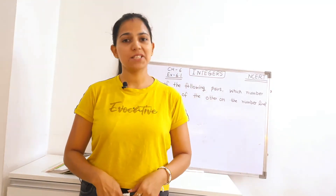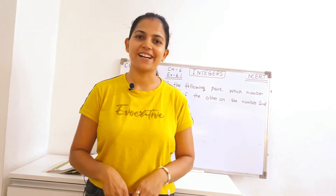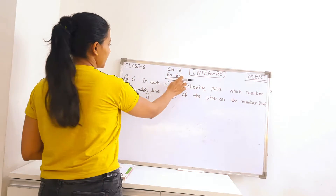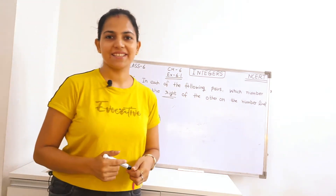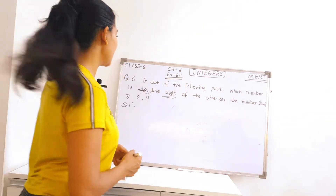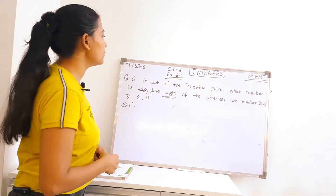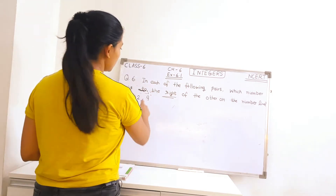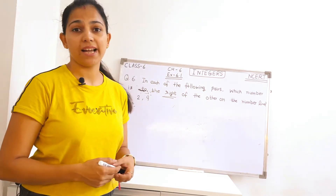Hello students, this is Pooja. Welcome to our class. Today we will do exercise 6.1, question number 6 of class 6. The statement is: in each of the following pairs, which number is to the right of the other on the number line?